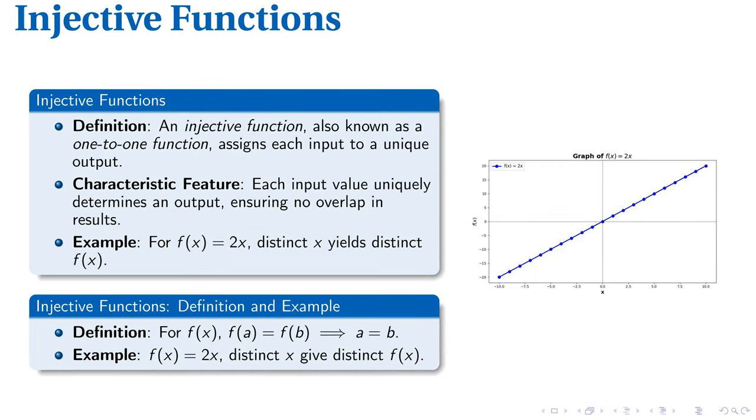Injective functions, commonly known as 1-to-1 functions, ensure each input is tied to a unique output, offering distinct results without any overlap. This injectivity shines when considering the function f of x equals 2x.